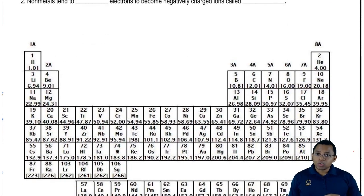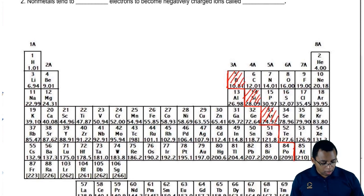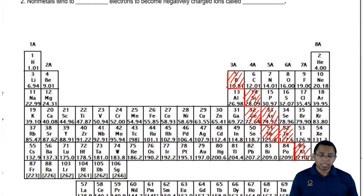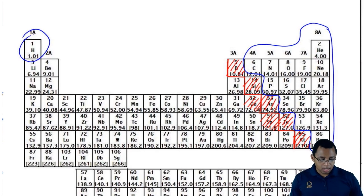Remember we talked about the subdivisions of the periodic table. There's a staircase here, and the elements along it are the metalloids. Everyone to the right of the metalloids are your nonmetals, including hydrogen. Everything else on the periodic table is a metal.